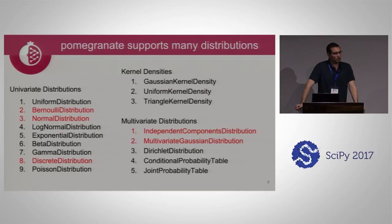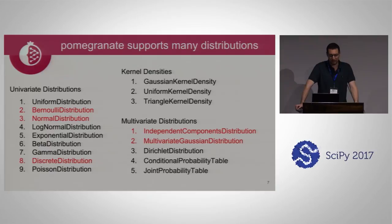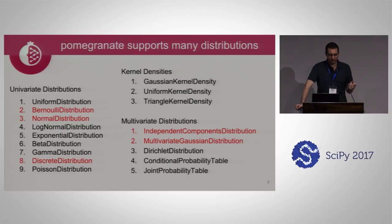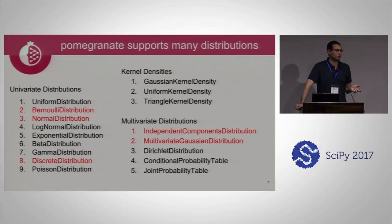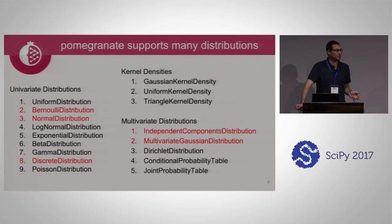Pomegranate currently supports a wide variety of probability distributions. The most common are the Bernoulli distribution, normal distribution, and multivariate Gaussian. Pomegranate is structured very modularly, so you can create any of the more complex models by simply dragging and dropping any of the simpler models in. By implementing a log normal distribution, for example, you can now create log normal mixtures and log normal hidden Markov models without having to change any of the underlying code.